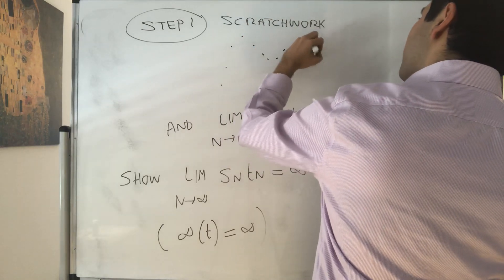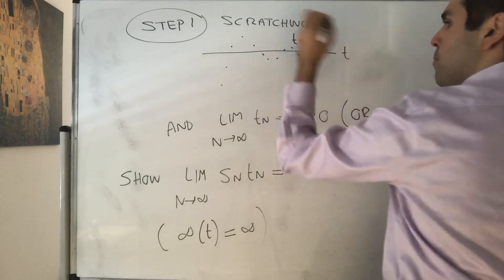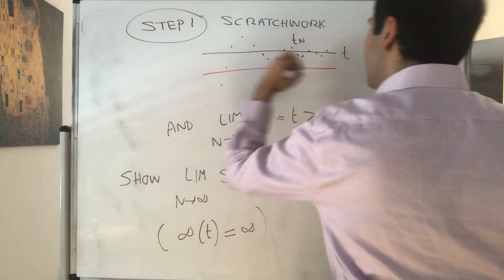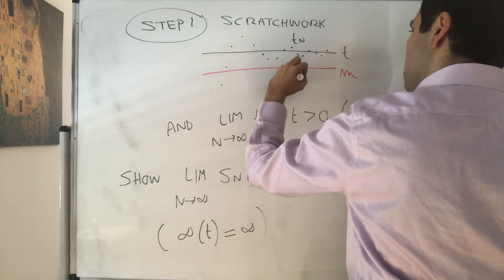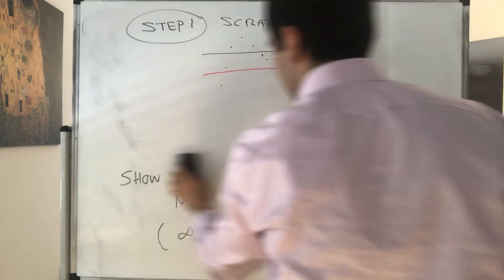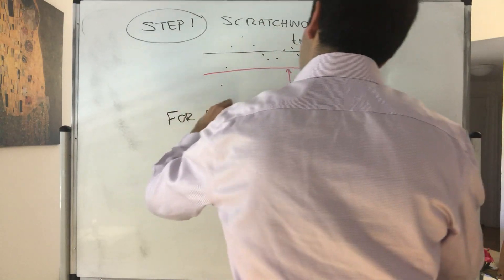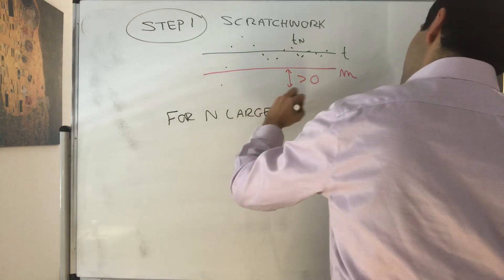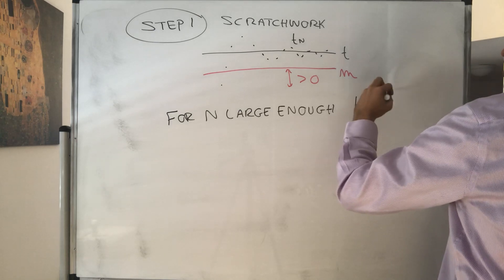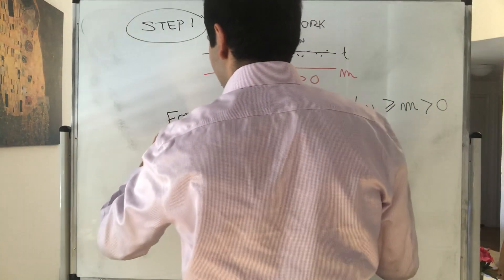So if you think, let's say, for instance, the convergence case, Tn goes to T, a positive limit. Well, eventually, it has to be bigger than some positive number m. So, in other words, for n large enough, what we know, we know that Tn is greater or equal to m, which is positive for some n.